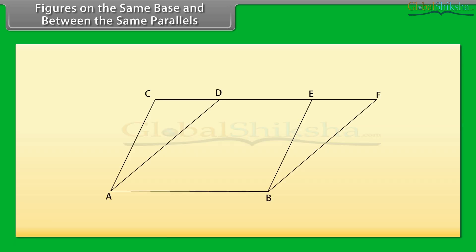Figures on the same base and between the same parallels. Now, look at this figure. We can see that parallelogram ABEC and parallelogram ABFD are on the same base, AB. Also, the vertices C and E of parallelogram ABEC opposite to AB, and vertices D and F of parallelogram ABFD opposite to AB, lie on the same line CF which is opposite to AB. So, we can say that both the parallelograms lie on the same base AB and between the same parallels AB and CF.